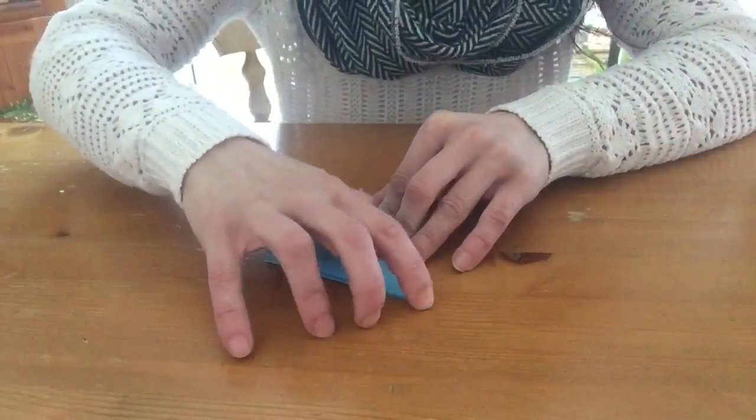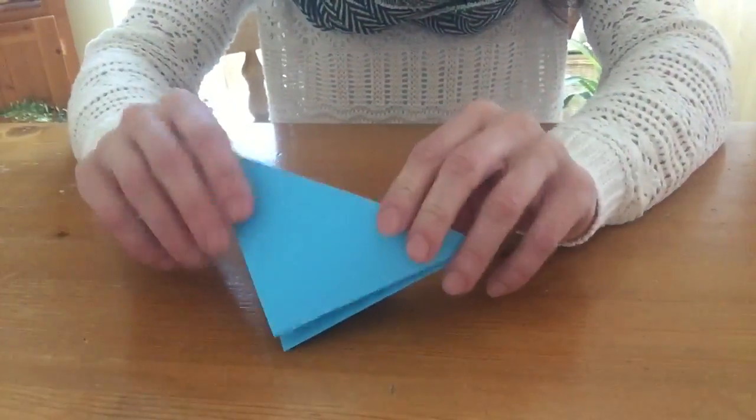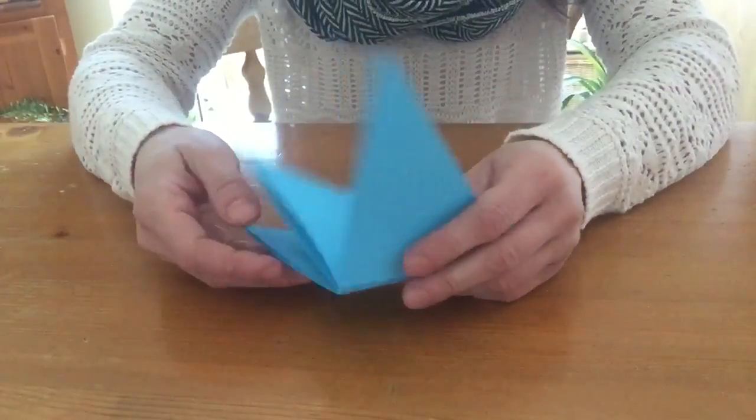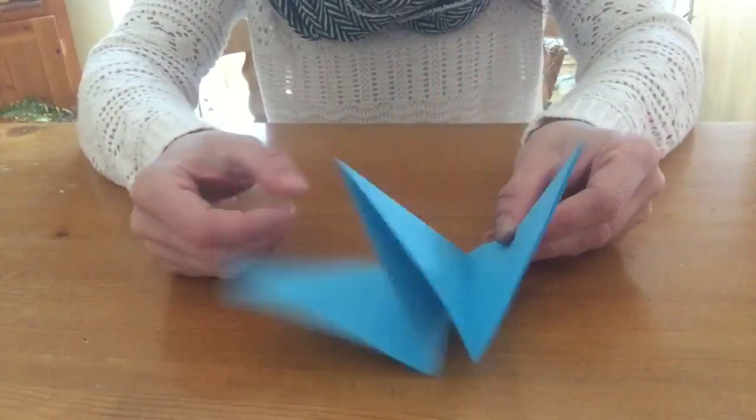So there's your wee triangle. So what you'll get is you'll end up with this kite shape. So that's what you'll end up with.